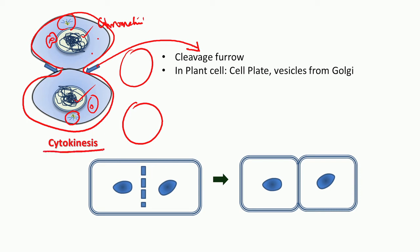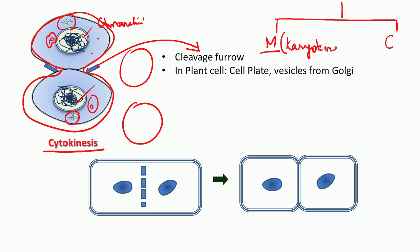This process where the cytoplasm divides is called cytokinesis. So cell division consists of two basic things: the mitotic phase and cytokinesis. Mitosis — also called karyokinesis — is the stage where the DNA gets separated and two daughter nuclei are formed. Once the two daughter nuclei are formed, the cytoplasm divides, leading to cytokinesis.